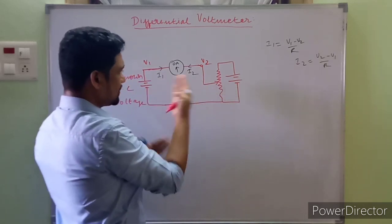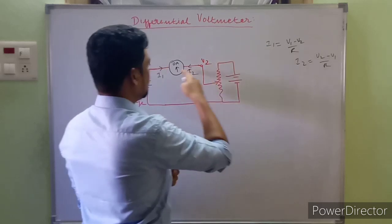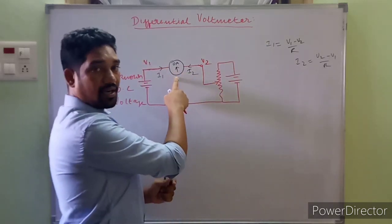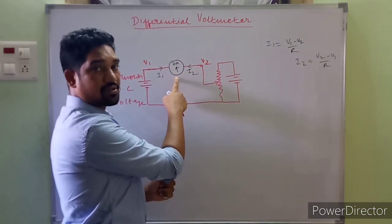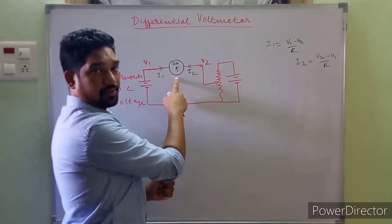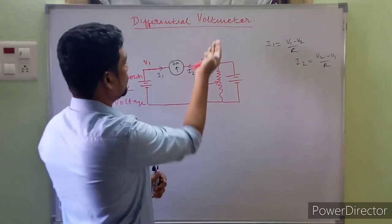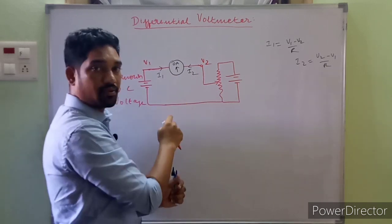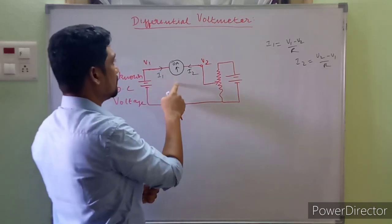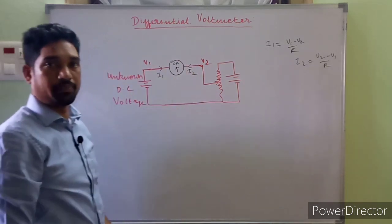And what is R in this case? In this case, R is the internal resistance of the basic meter, the internal resistance of the null detector. So this is how we make use of measuring unknown DC voltage in differential voltmeters.